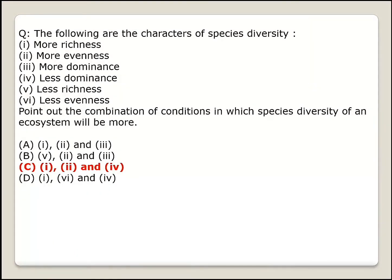Next question: the following are characters of species diversity — more richness, more evenness, more dominance, less dominance, less richness, less evenness. Point out the combination of conditions in which species diversity in an ecosystem will be more. Option C — more richness, more evenness, and less dominance — is the correct answer.